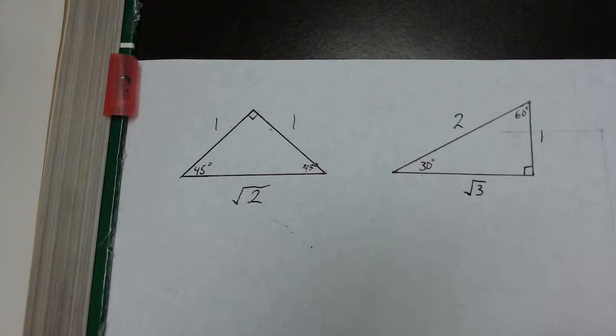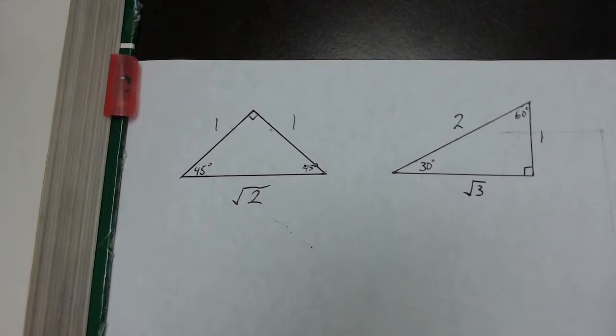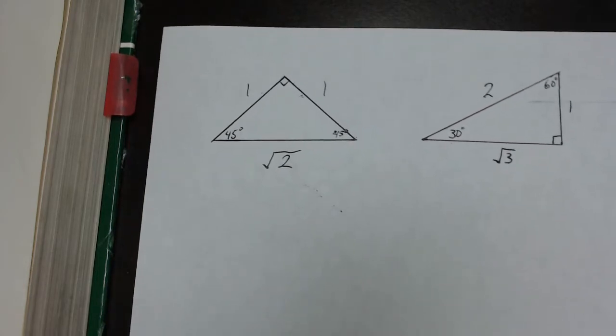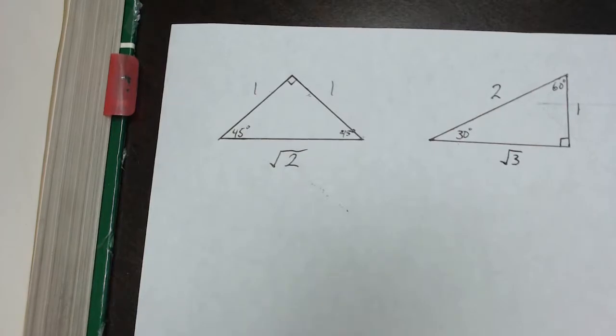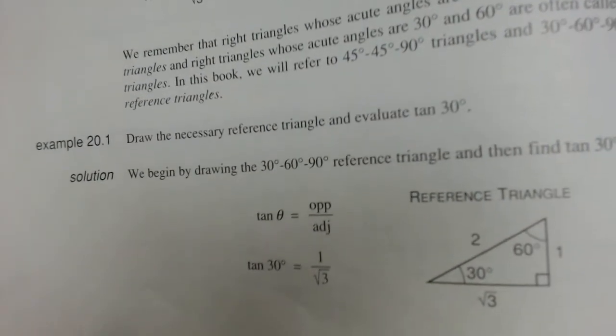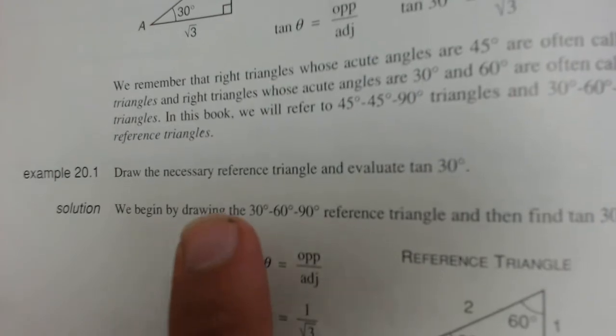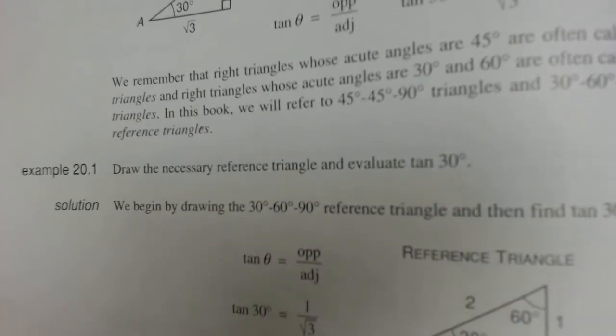So these are our two reference triangles. Now, how we're going to use them is to solve trigonometric problems without the use of a calculator. So an example: if you look at example 20.1 in your book, that's on page 146, they say draw the necessary reference triangle and evaluate the tangent of 30 degrees.